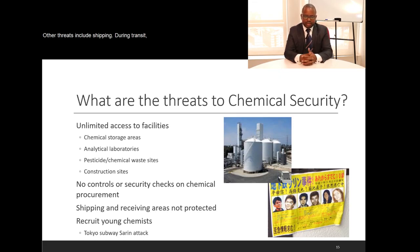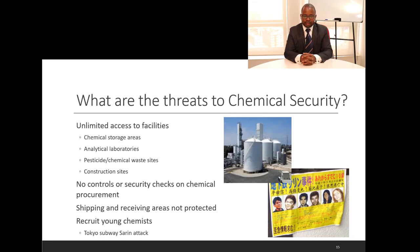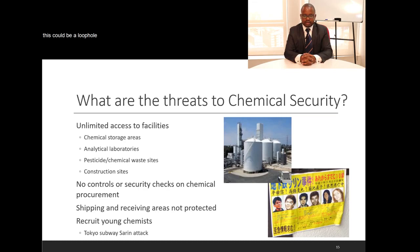Other threats include shipping: during transit, chemicals are at the highest risk, and measures should be put in place during movement of chemicals from one place to another to provide the best protection. Controls and documentation are also very important — if information about chemicals is not well stored or documented, this could be a loophole through which persons with ulterior motives could get their hands on chemicals and cause harm.